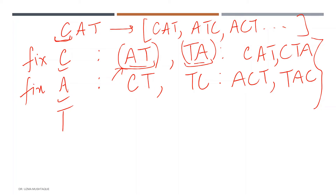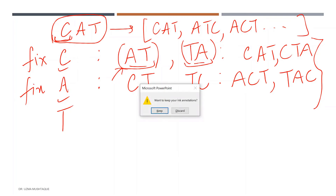So my recursive call is: for every substring, fix one letter and get permutations of the remaining letters. The base case is when the length is one. Keep going over the entire string with a loop, and for every letter create the rest of the permutations until you arrive at that single final letter.